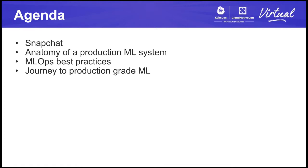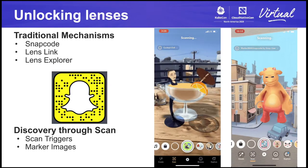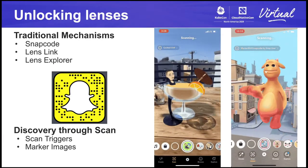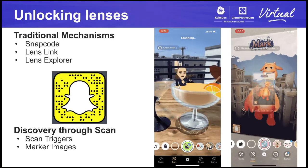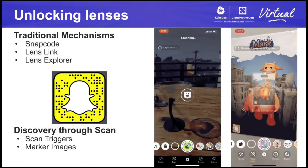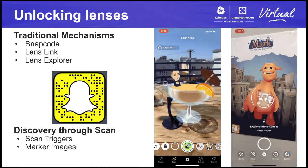Snapchat is the fastest way to share a moment. At Snap, we contribute to human progress by empowering people to express themselves, live in the moment, learn about the world, and have fun together. One of the ways we allow folks to express themselves is through augmented reality experiences we call lenses. In the app, these lenses can be unlocked directly through a Snap code, lens links, and a lens explorer. Snapchatters can also discover these lenses using the scan feature.